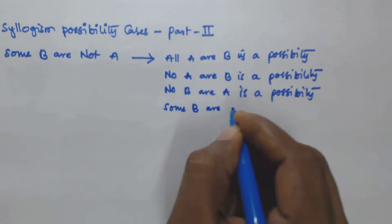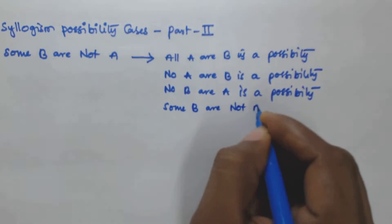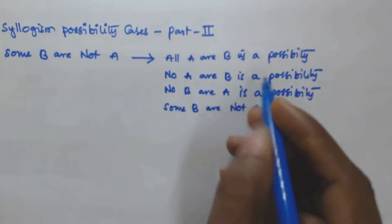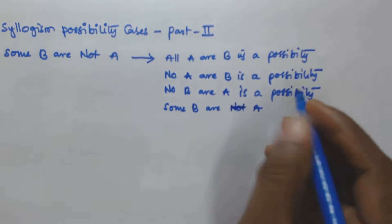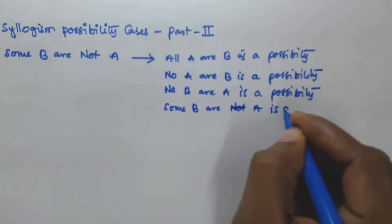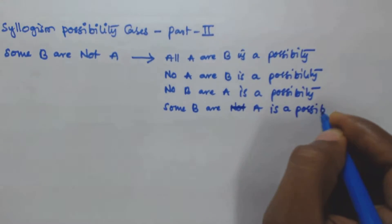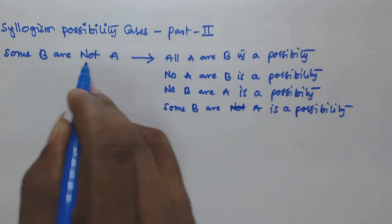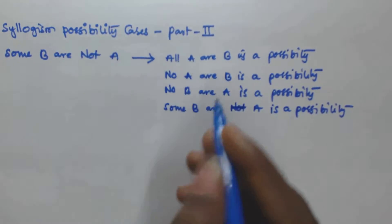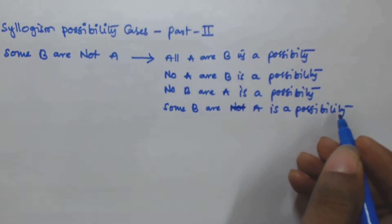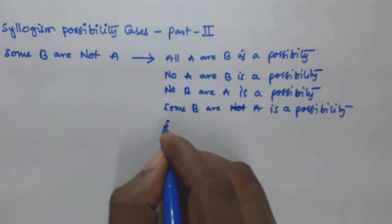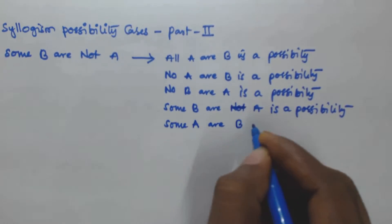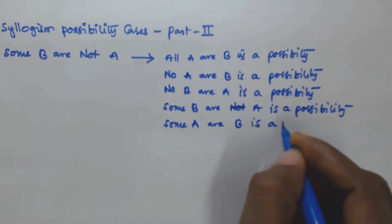Next, 'some b r a' is a possibility — if some b are not a, then some b are going to be a, so 'some b r a' is a possibility. And from that, 'some a r b' is also a possibility.